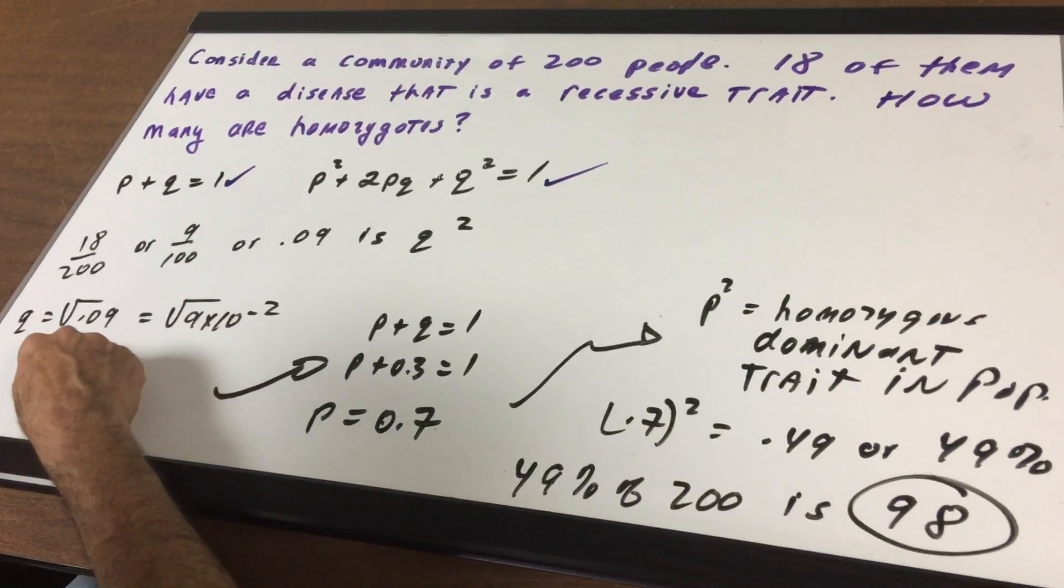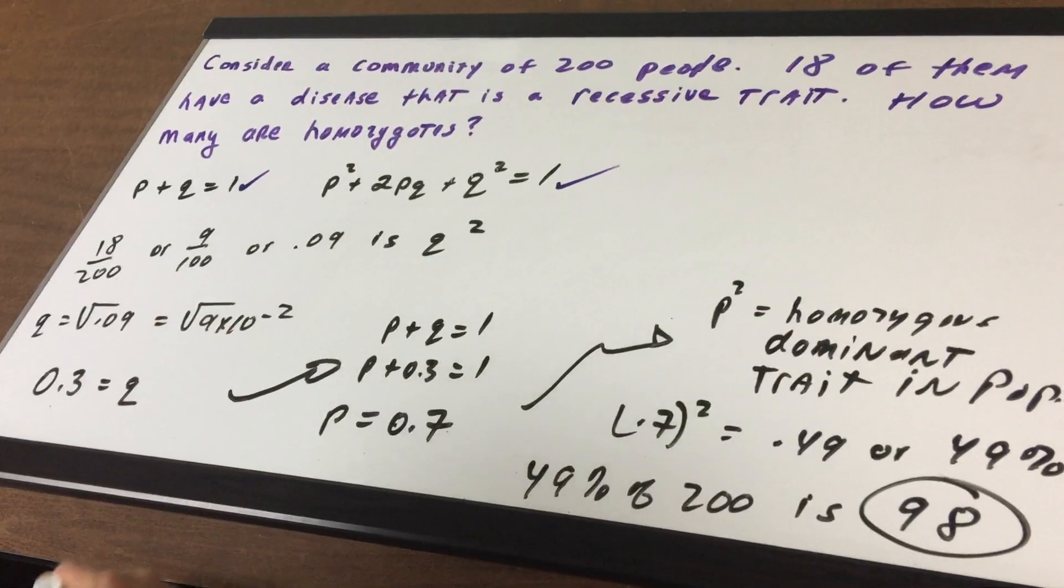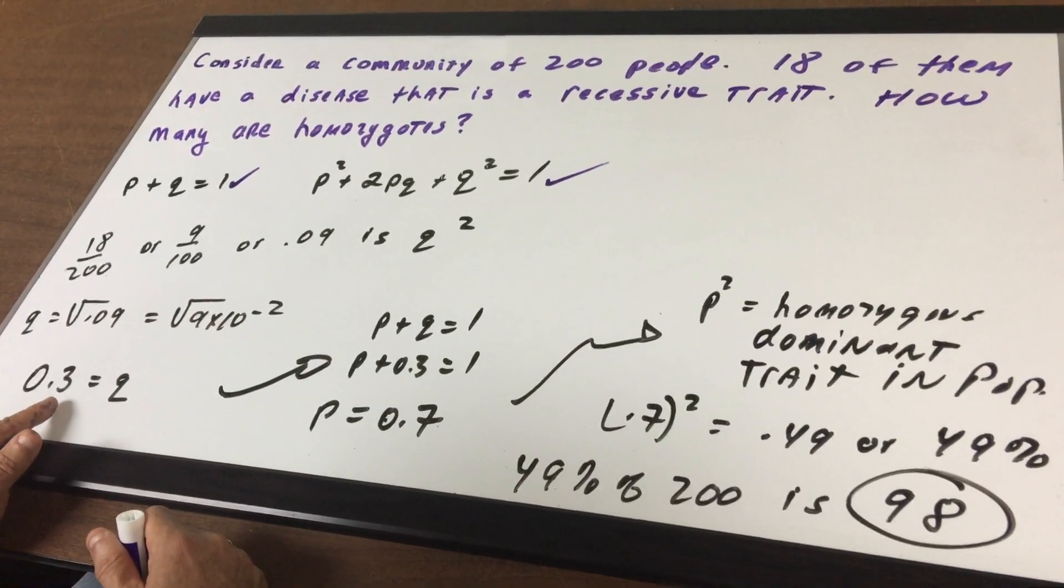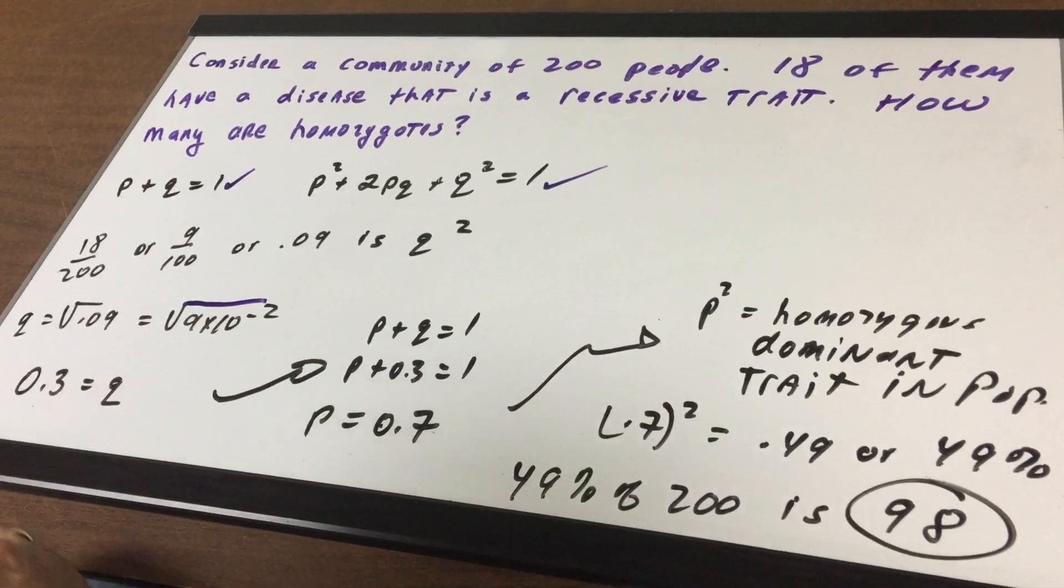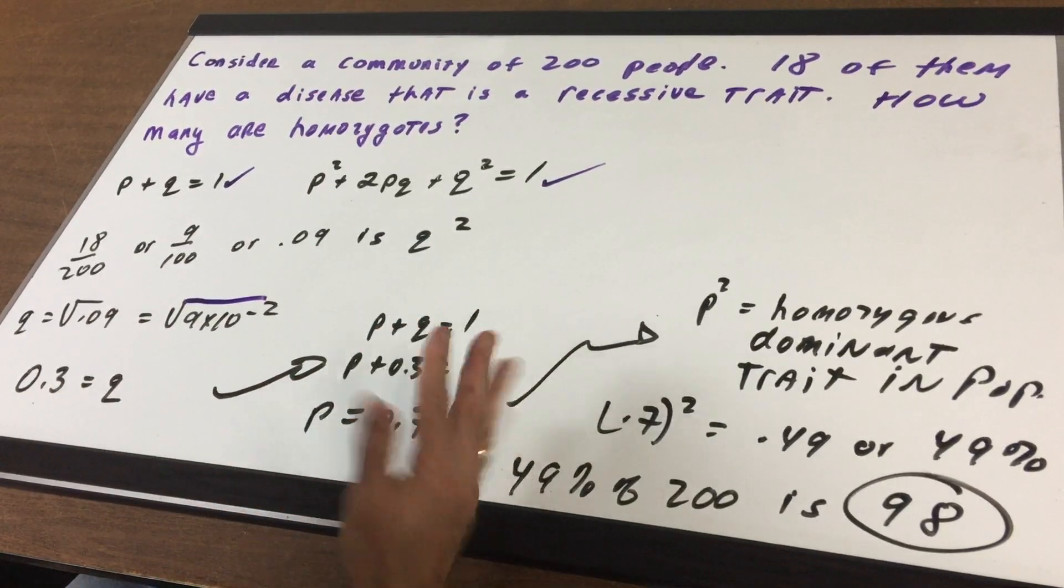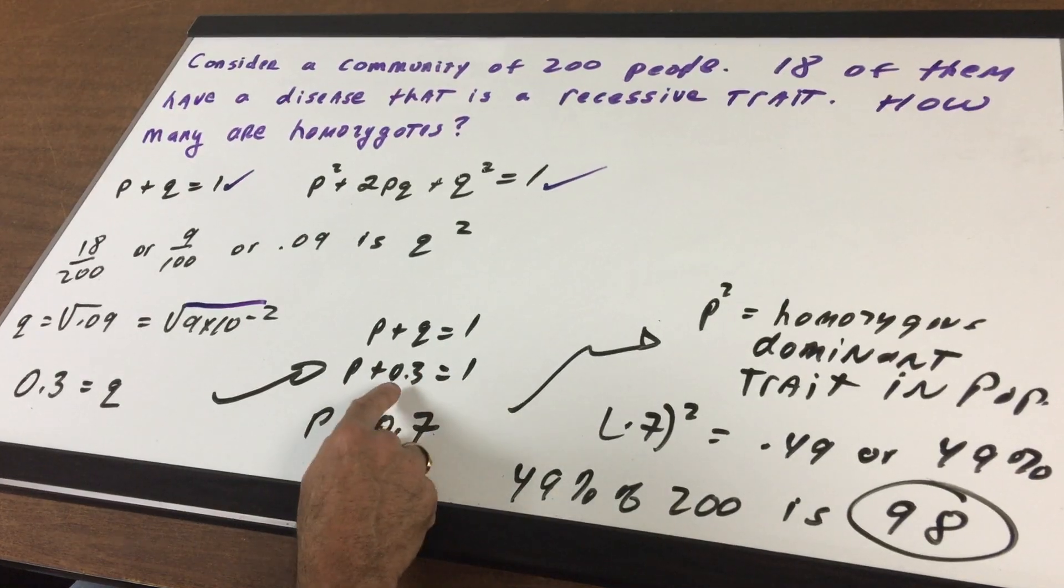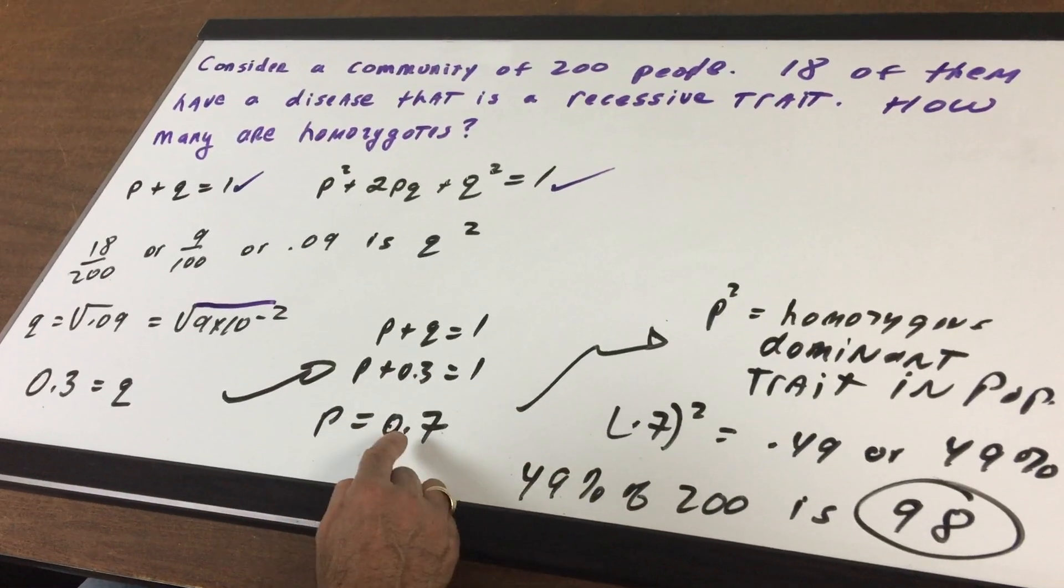So let's square root 0.09, which is the square root of 9 times 10 to the minus 2. That gives me 0.3. Hopefully you could do that. Now once we got Q, we could solve for P easily. We subtract 0.3 from 1, we get 0.7.